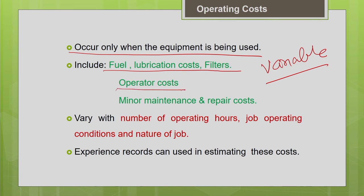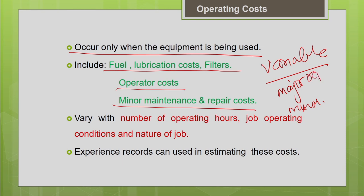The wages paid to the operator are part of operating cost. Maintenance and repair cost — which can be either major or minor — also form part of it. Major repair involves huge replacement of a particular part and is usually accounted under ownership cost. Only the minor repair cost is considered under operating cost. For example, replacing the complete boom of an excavator is a major investment under ownership cost, whereas replacing wiring or small parts like headlights is a minor repair under operating cost.